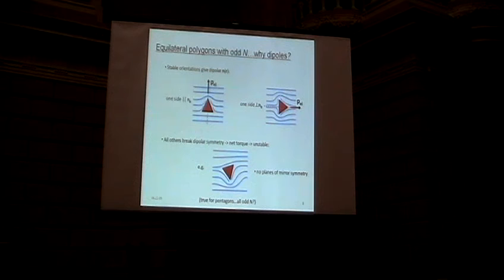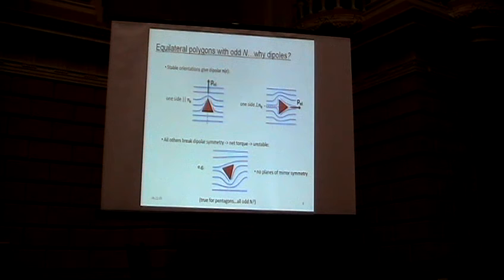Now, you can only imagine two orientations for a triangle in a uniform nematic. And they both give dipolar director fields. This one, where one side is along the director there, and one with a side perpendicular to the director. So this gives you a dipole along the far field director, this gives you a dipole perpendicular.